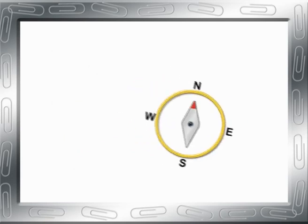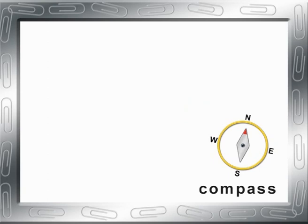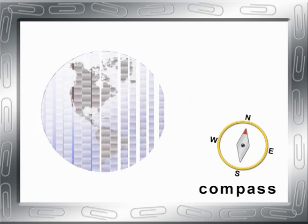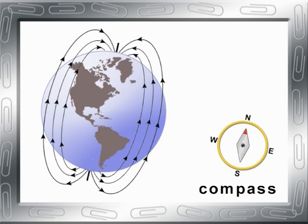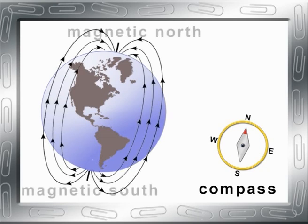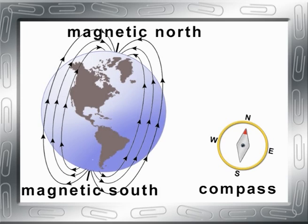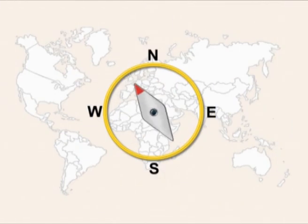A compass is an example of the force of magnetism at work. The Earth has iron at its core, which turns it into a giant magnet, with its poles lying at magnetic north and magnetic south. When the needle of the compass turns to point to magnetic north, it is because of the attractive force of the Earth's magnetic field.